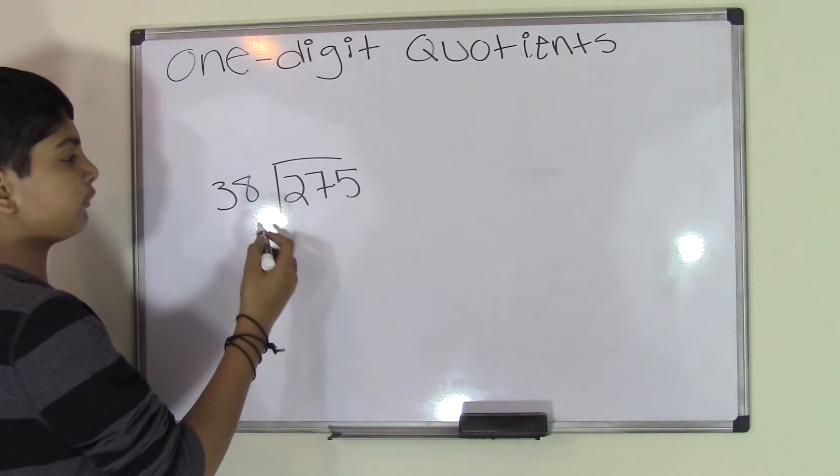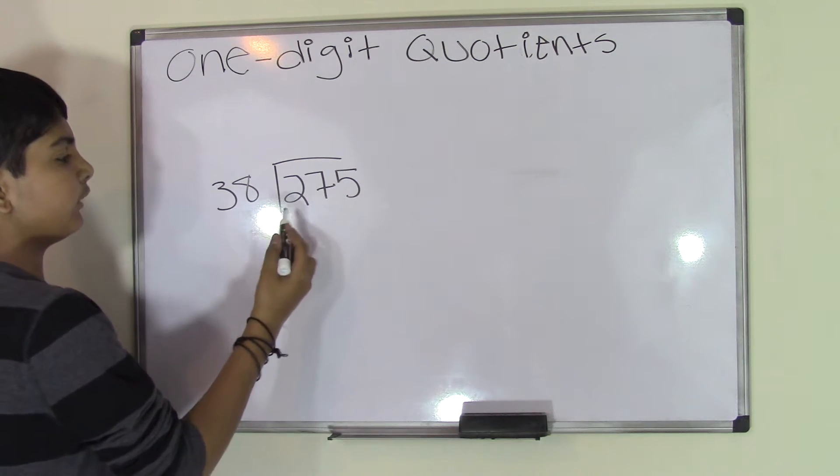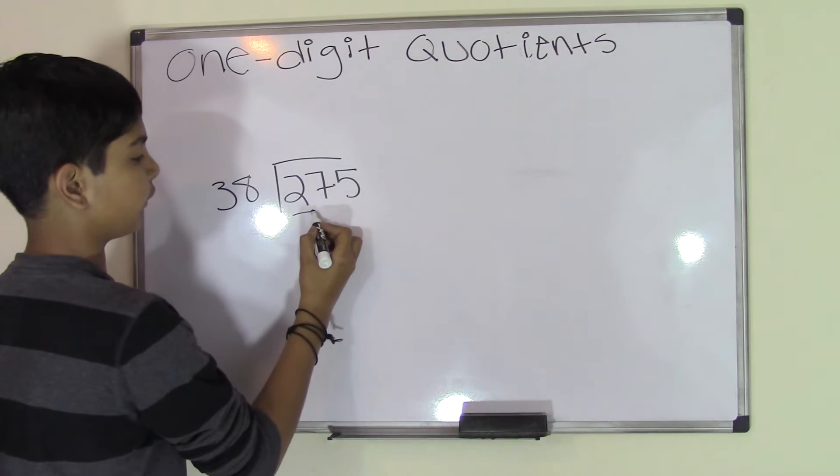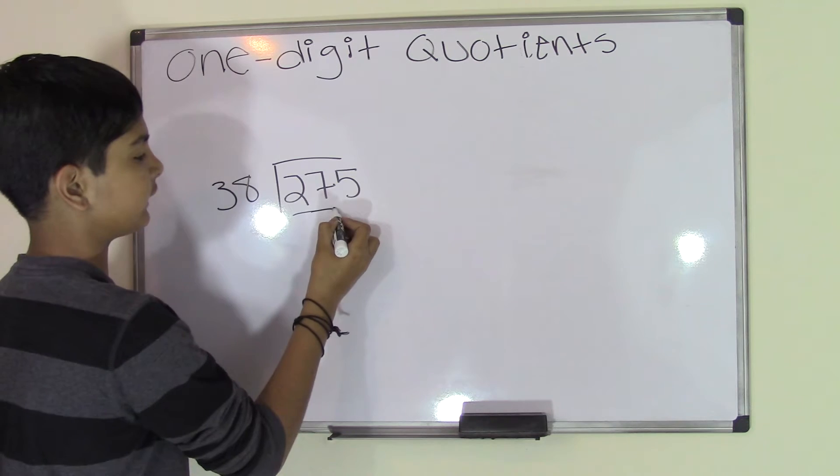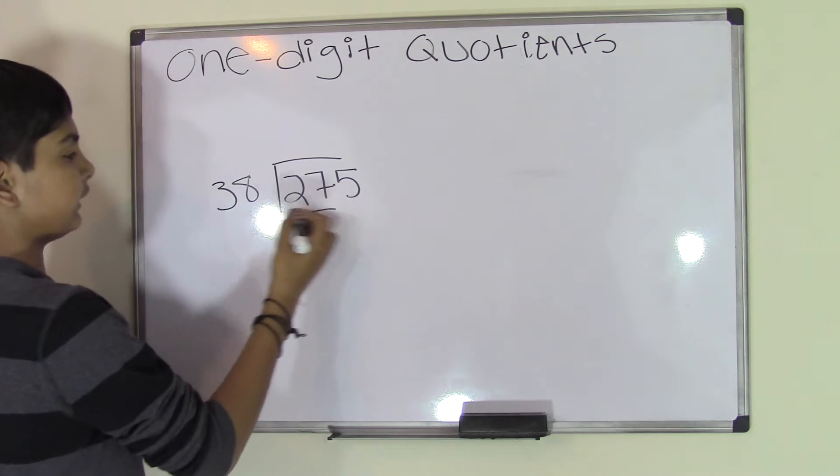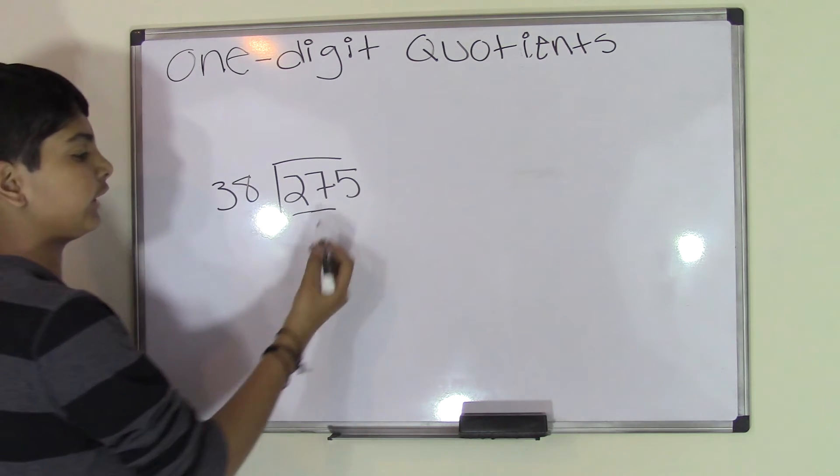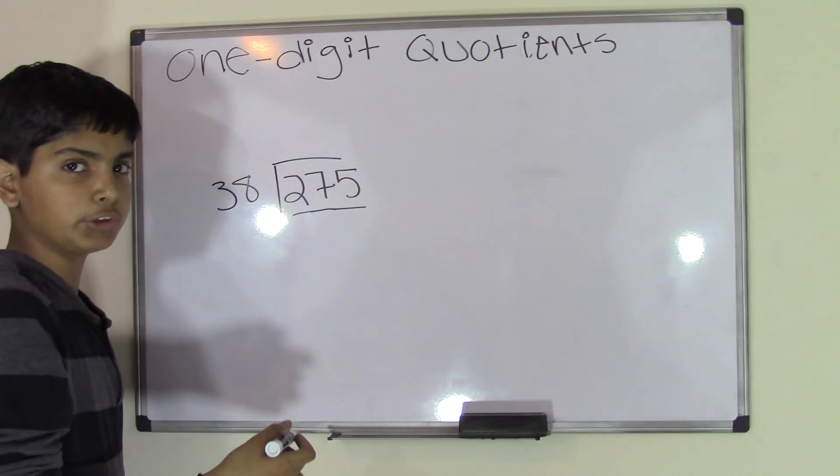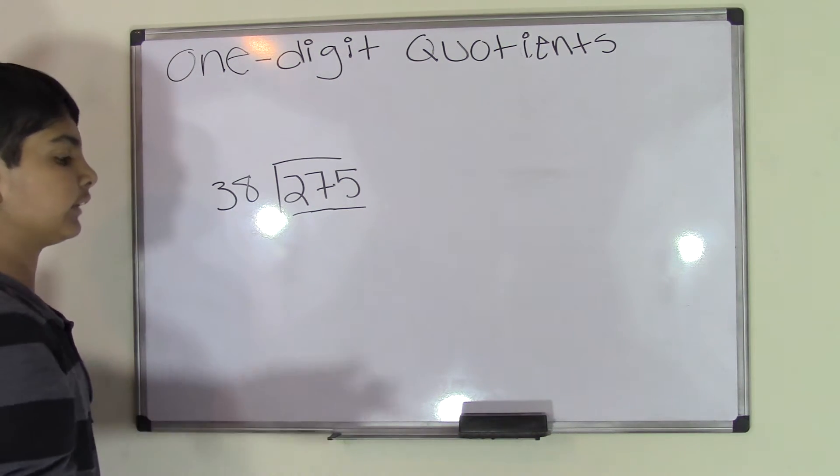First, let's check if 2 can go in 38. No, because it's less than 38. Now let's add the 7. Can 27 go in 38? No, still less. Now let's add the 5. Can 275 go into 38? Yes, because it's greater than 38.